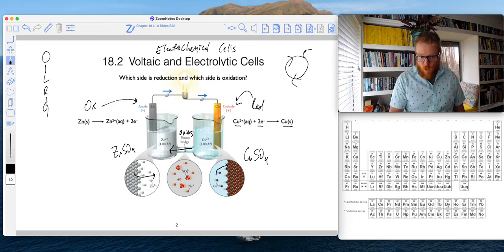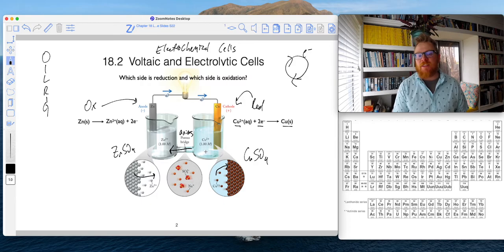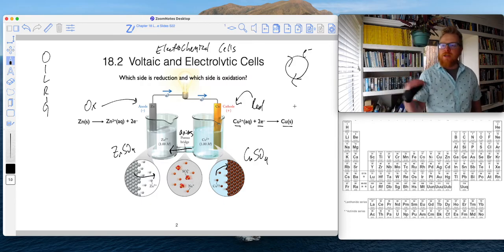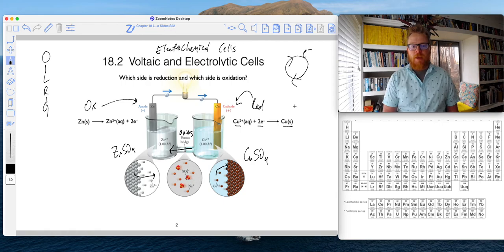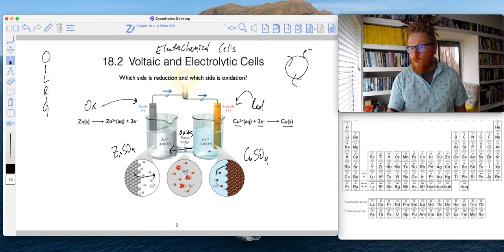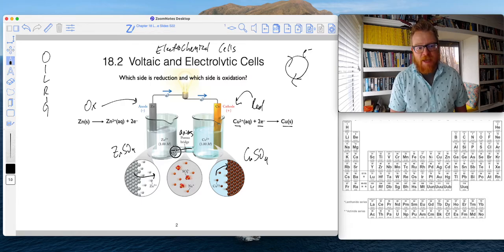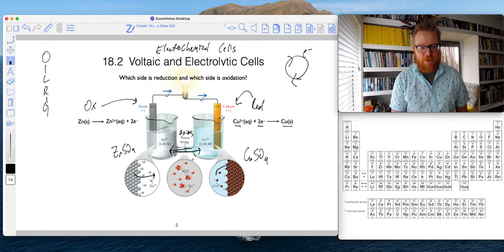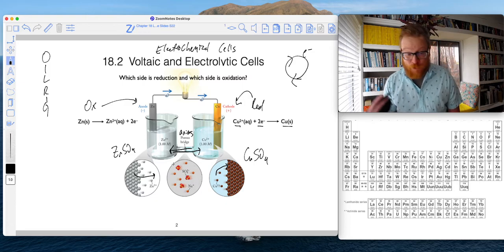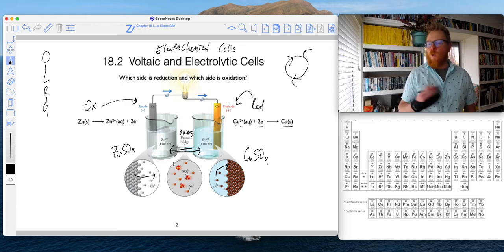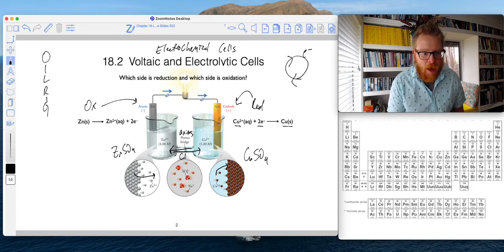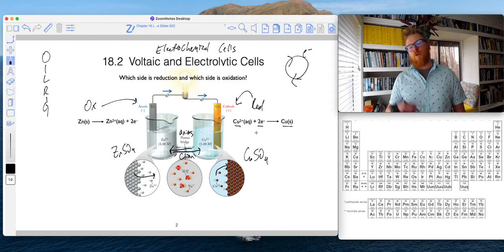Similarly, when copper ions are leaving the solution and precipitating onto the metal rod, it might temporarily leave the solution more negatively charged. To compensate for that, cations from this solution—in this case sodium, because sodium is basically everywhere and hopefully as you've seen in your qualitative analysis with your flame tests—trace amounts of sodium will travel over to charge balance these two halves.